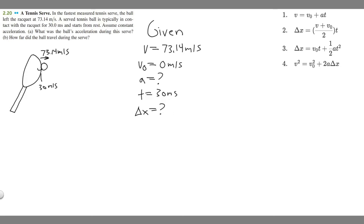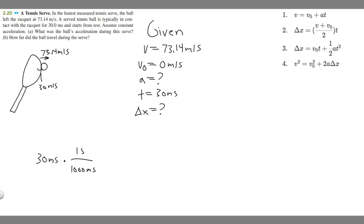We need to make sure our units align. Time is in milliseconds but velocity is in meters per second, so we need to convert to seconds. For every 1,000 milliseconds there is one second, so we divide 30 by 1,000 to get 0.03 seconds. Make sure you have your units aligned — so now we have 0.03 seconds.